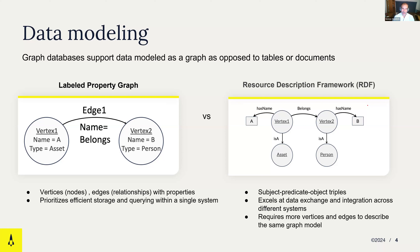RDF was originally conceived as a data model meant to facilitate one use case: publishing data on the web. That means it comes with certain baggage, both positive and negative. On the positive side, things modeled in RDF come with URIs, meaning they're globally referenceable, which makes it a very good choice for data integration use cases. The key abstraction in RDF is triples, which correspond to subject, predicate, and object — very close to the syntactic structure of language.